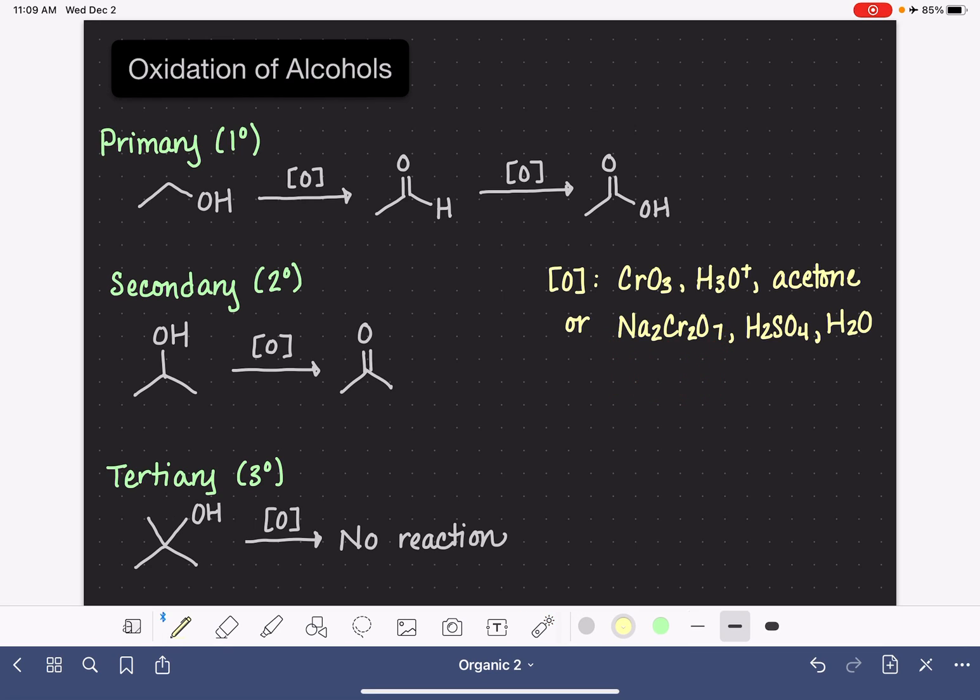And then last but not least, the third reagent that we have is PCC, pyridinium chlorochromate, in the solvent CH2Cl2. This is called dichloromethane. Sometimes you might see it written as DCM. It means the same thing. So any one of these three sets of reagents will serve to do the oxidations in these various steps, although not all of them work exactly the same way.